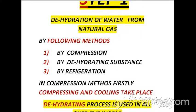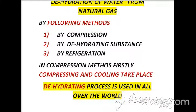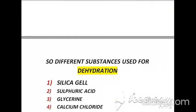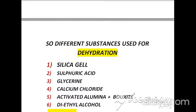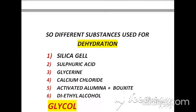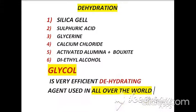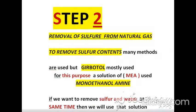In the compression method, compressing and cooling take place first. The dehydrating process is used worldwide, and different substances are used for dehydration: silica gel, sulfuric acid, glycerine, calcium chloride, activated alumina plus bauxite, and diethyl alcohol. Glycol is a very efficient dehydrating agent used all over the world.